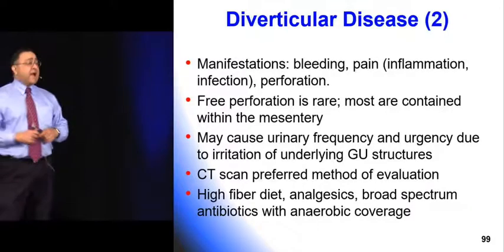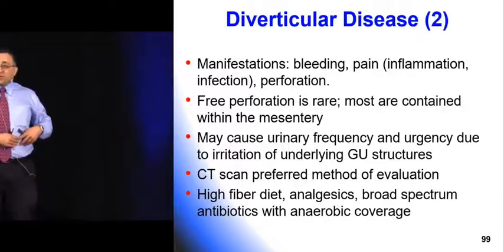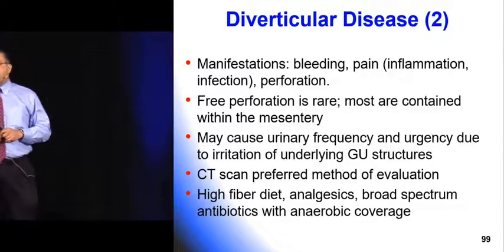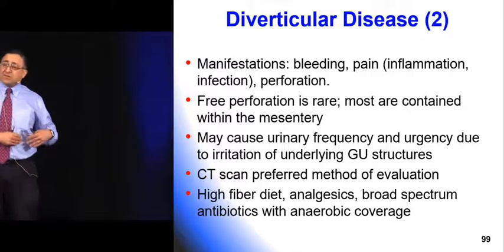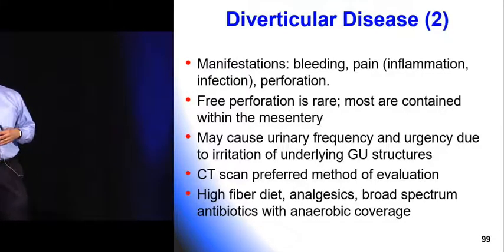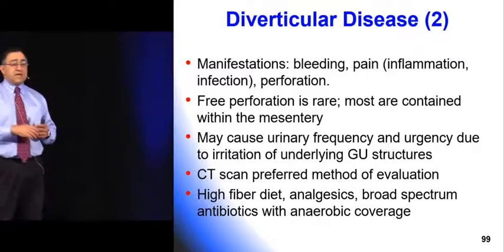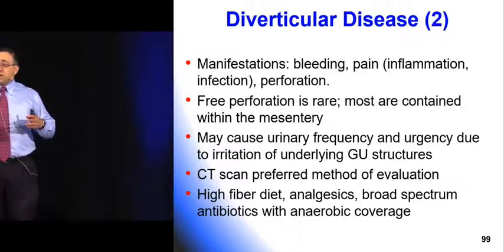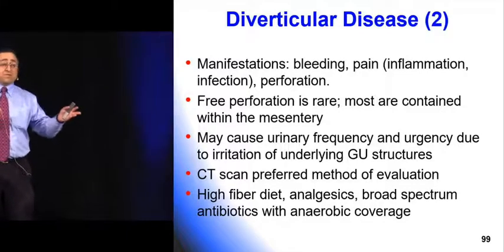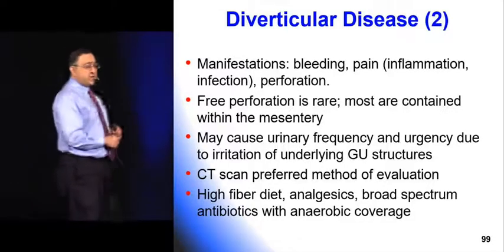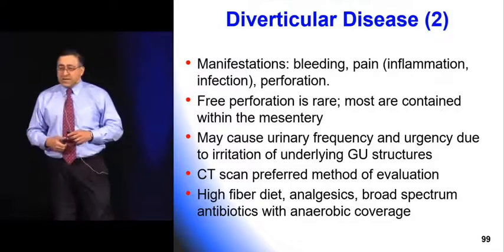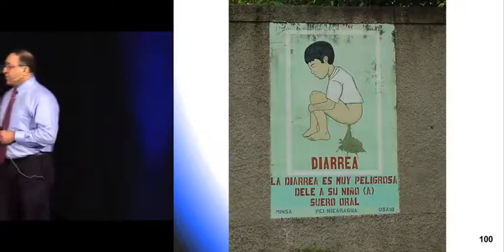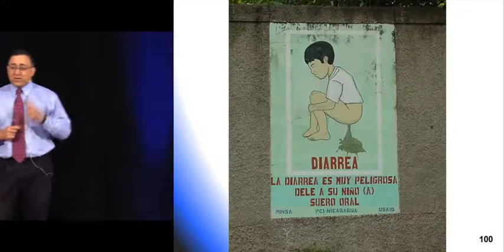Don't diagnose UTI unless there are white cells and good bacteria on a good specimen. For treatment: if the patient is sick or has peritonitis, they're going to the OR. If not sick with good follow-up, you can send them home with amoxicillin-clavulanic acid (Augmentin) to cover gram-negatives and anaerobes; if penicillin-allergic, ciprofloxacin plus metronidazole. Also prescribe high-fiber diet and analgesics.